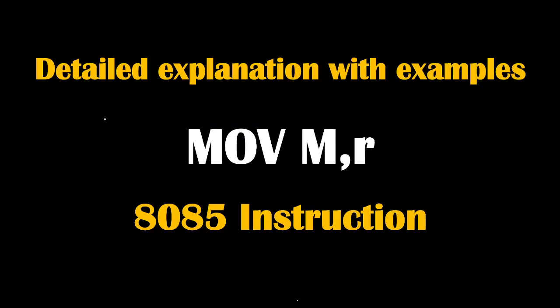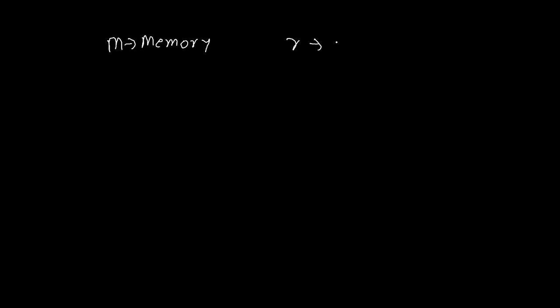One should know what is the meaning of M and what is the meaning of R. So, M stands for memory. And R stands for any general purpose register like B, C, D, E, H, L, or accumulator. All these things are replacing R, and M is memory.